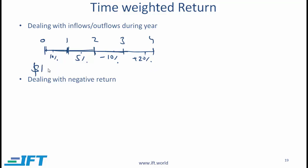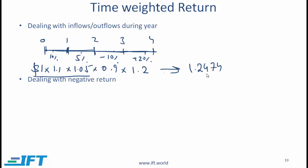We figure out what happens to a dollar invested at the start of the period. The calculation is straightforward: multiply by 1.1 for the 10% return in quarter 1, then by 1.05 for the 5% return, then by 0.9 for the 10% decline, and finally by 1.2 for the 20% gain in quarter 4. This gives us 1.2474, meaning the return over the year was 24.74%.